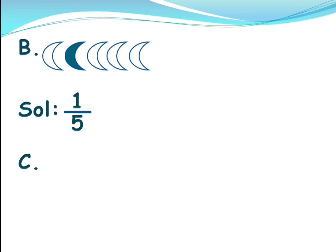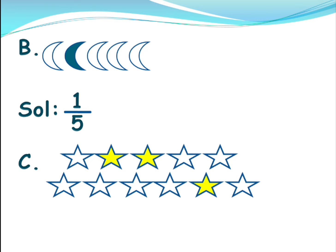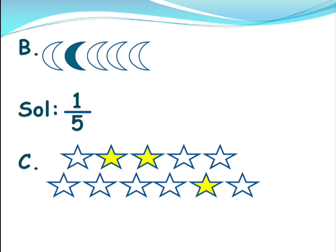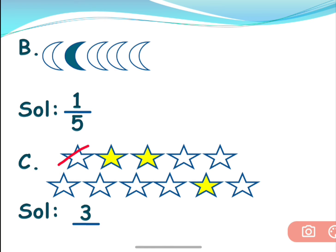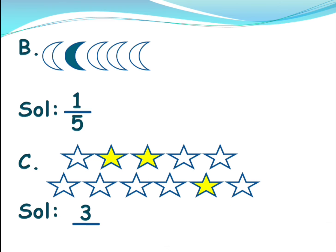Next, here you have some stars. Three stars are colored — one, two, three. So three is the numerator. Now how many are there in total? One, two, three, four, five, six, seven, eight, nine, ten, eleven — eleven. So the denominator is eleven. The fraction is three by eleven.